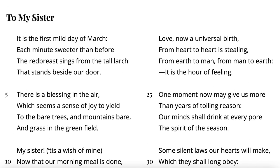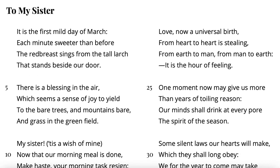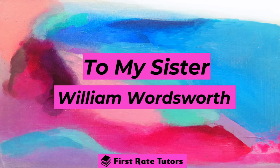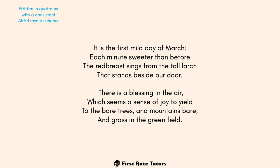Essentially, this poem features the narrator — who we can assume is Wordsworth himself — telling his sister that it's the first day of March, spring has started, and inviting her to put on her woodland dress and go out to enjoy nature, because it's going to have something to teach them. Remember, he wrote this poem while just emerging from a period of depression, which reflects his feeling of hope and his idea that nature can be healing and a teacher.